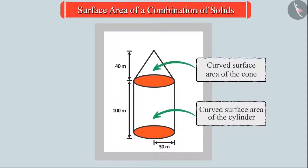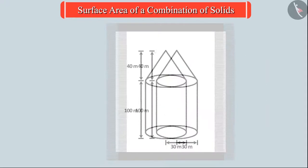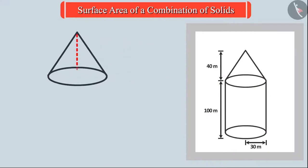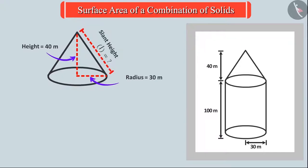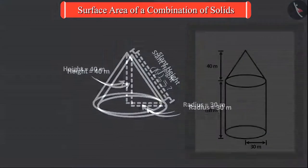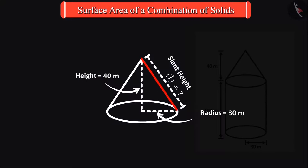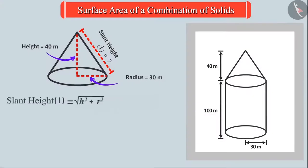To find the curved surface area of the cone, it is also necessary to know its slant height. The slant height can be found by substituting all the values into the slant height formula.